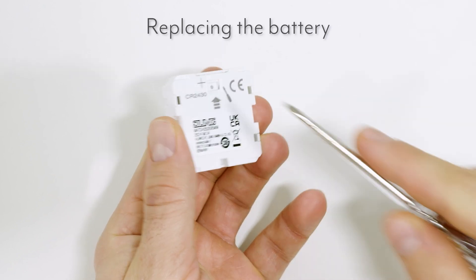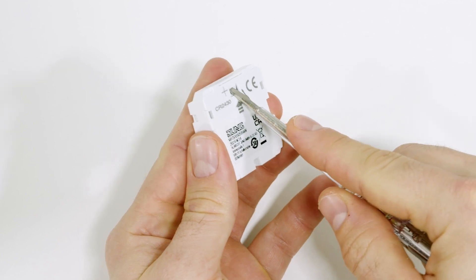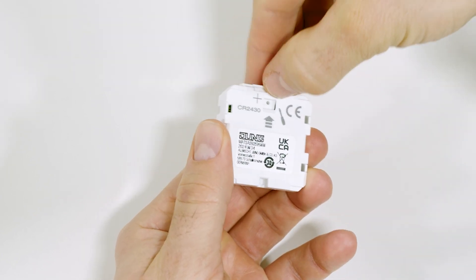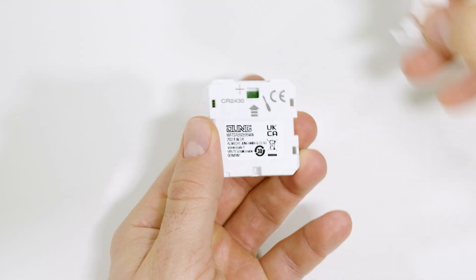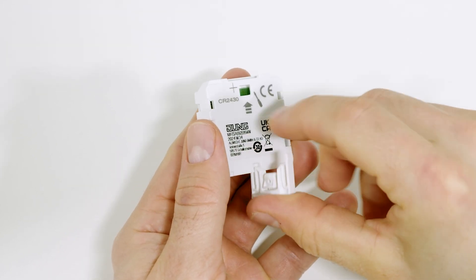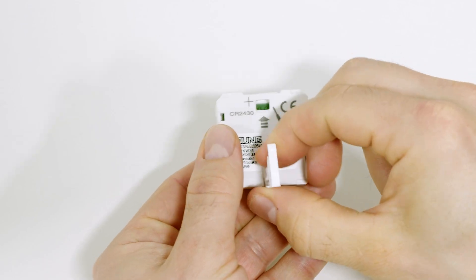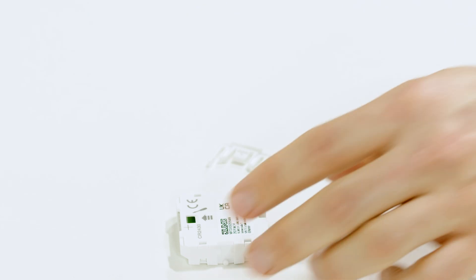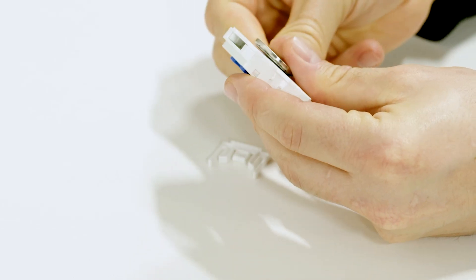Unlock the battery compartment cover by pressing on the tab on the back of the radio module with a flat blade screwdriver and sliding it forwards. Push the battery out using the battery compartment cover. Take care not to push the battery out with a screwdriver as this can lead to damage inside the module.